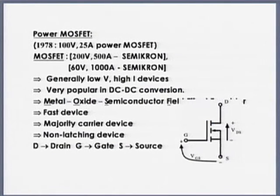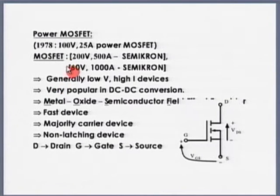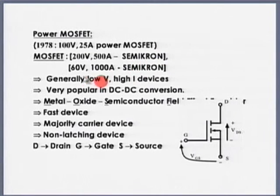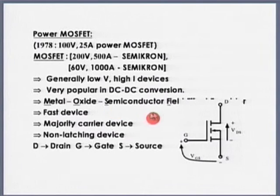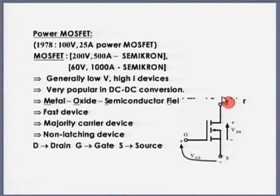Another device which is very popular, especially in DC to DC conversion, is the power MOSFET. In 1978, a 25-ampere power MOSFET was invented. As of now, 200-volt 500-ampere MOSFETs and 60-volt 1000-ampere MOSFETs by Semicron are available — low voltage, high current. Generally MOSFETs are used in relatively low-voltage, high-current applications. They are very fast devices. MOSFET stands for Metal Oxide Semiconductor Field Effect Transistor.